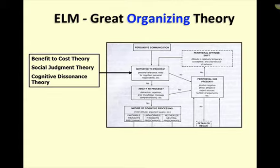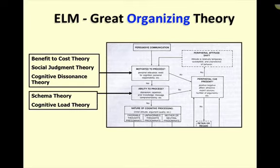Remember that people aren't willing to process information that's outside their zone of tolerance, and information that is within that zone of tolerance but not next to their anchor causes dissonance that they then have to resolve. Under ability to process, we looked at schema theory — you have to have a schema to start with to organize and build on — and cognitive load theory. If the information coming in is above your cognitive limit, you're not able to process.